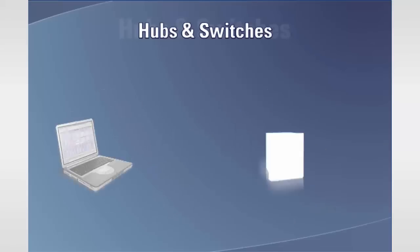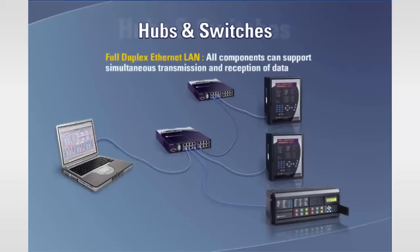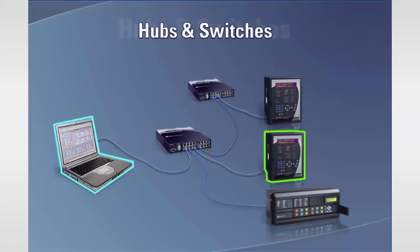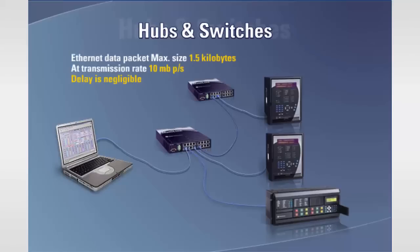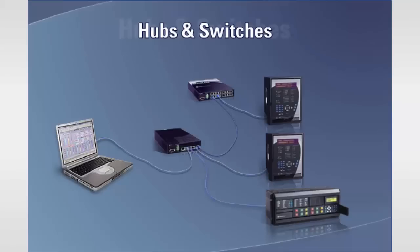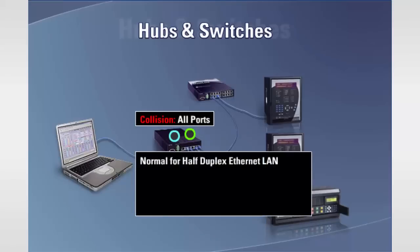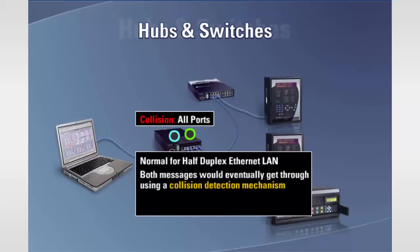Within a full-duplex Ethernet LAN, all components can support simultaneous transmission and reception of data. For example, if the green and blue Ethernet devices transmit a message onto the Ethernet network at the same time, one of the messages will be buffered at the switch, and the other message will be passed through to the other ports. Once the blue message has been transmitted, the switch will send the green message automatically. Given that the maximum size of an Ethernet data packet is 1.5 kilobytes, even at a transmission rate of 10 megabits per second, the delay is negligible. If the switch were replaced with a hub, both messages would collide at all ports. This is normal for a half-duplex Ethernet LAN, and both messages would eventually get through all ports using a collision detection mechanism built into the Ethernet layers, but there would be additional delays.